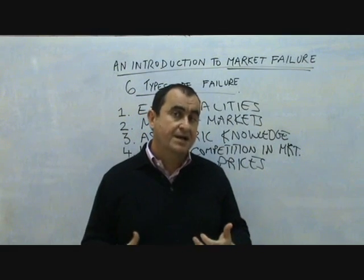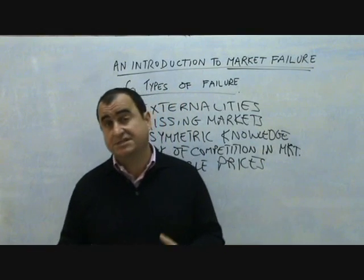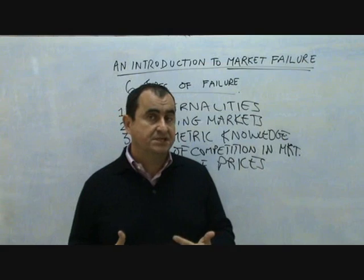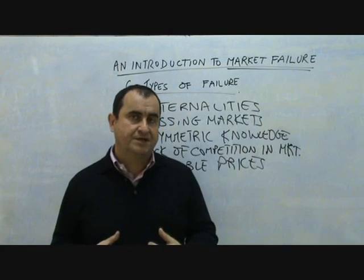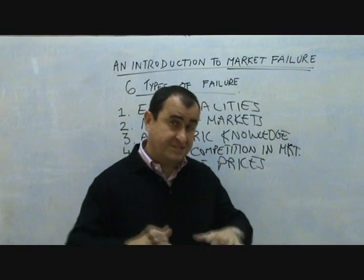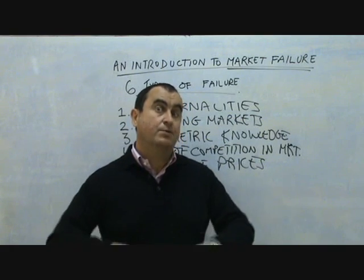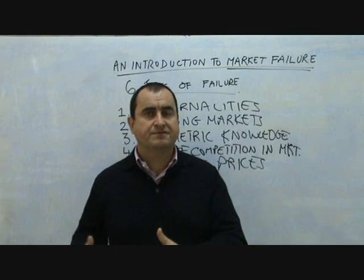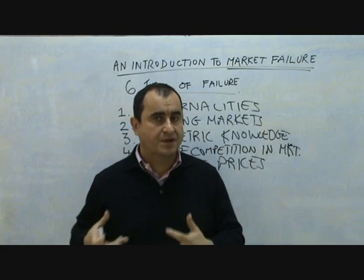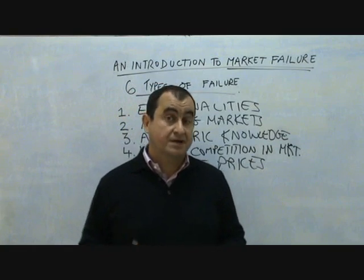Governments see this instability of prices in commodity markets as market failure and act to try to stabilise prices, usually through a buffer stock scheme or perhaps by establishing a price floor or a price ceiling beyond which the price is not allowed to go. Added to that, commodities have very inelastic supply so suppliers can't react quickly to changes in price anyway. All of this creates such difficulties that it is seen as market failure.